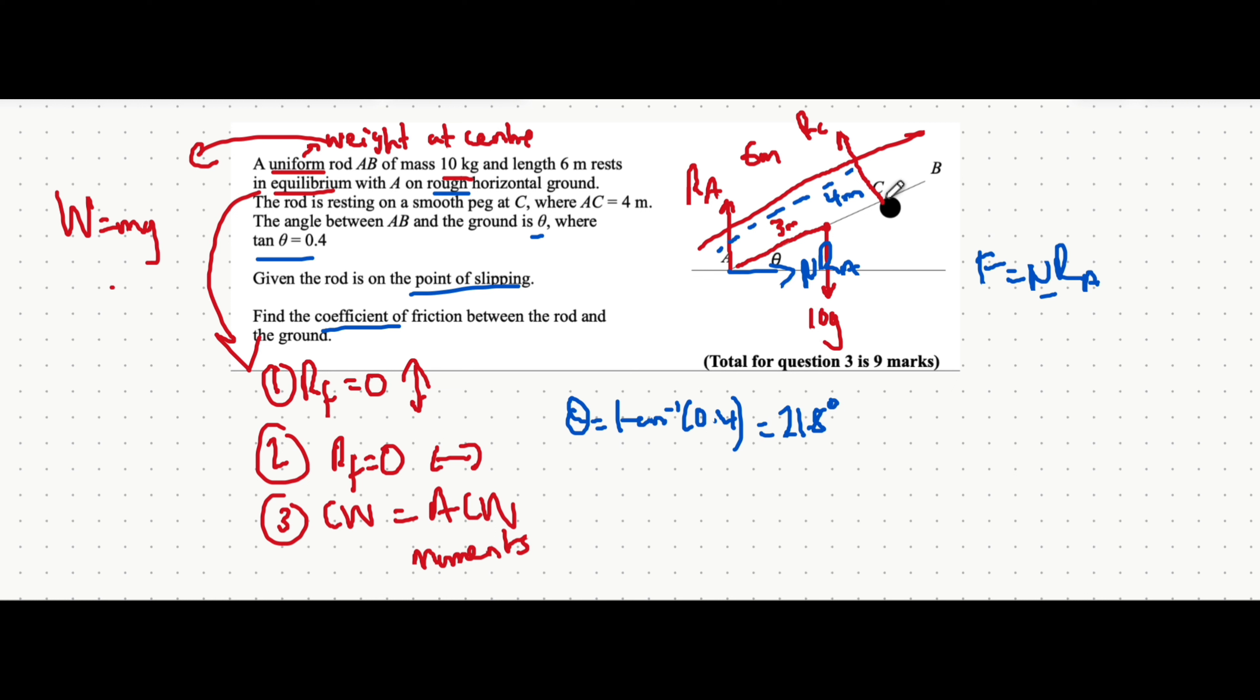Now we've finally labelled all the forces in the diagram. Is there no friction at the peg? There actually isn't because it's a smooth peg where there's no friction acting. Friction only acts on a rough surface.